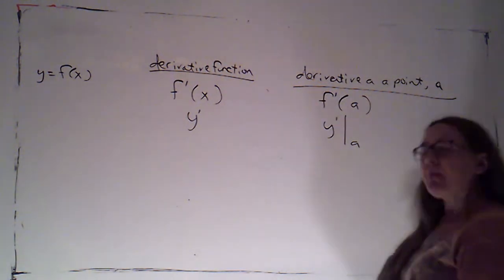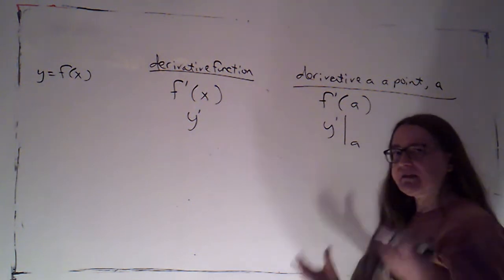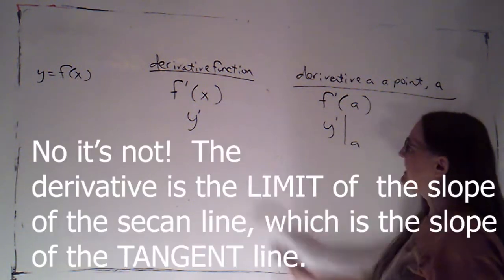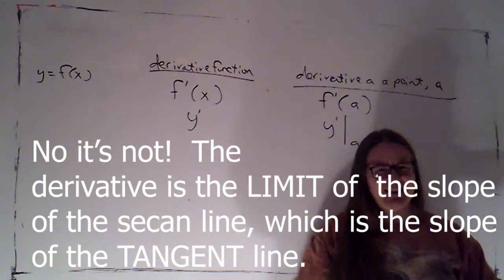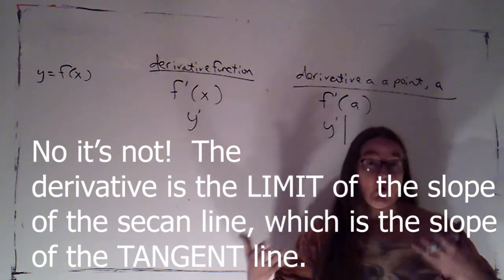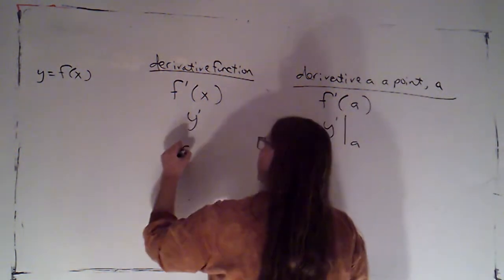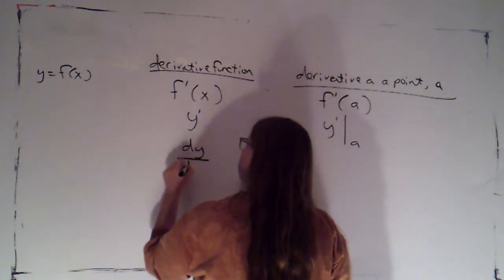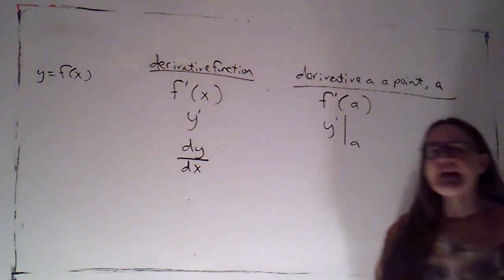Now, remembering that the derivative is the slope of the secant line, there's nothing in this notation that suggests slope to me. But Leibniz came up with this notation, dy by dx.